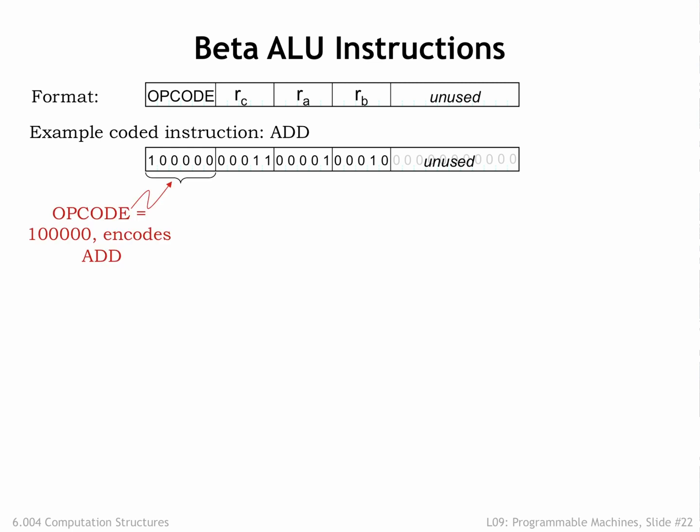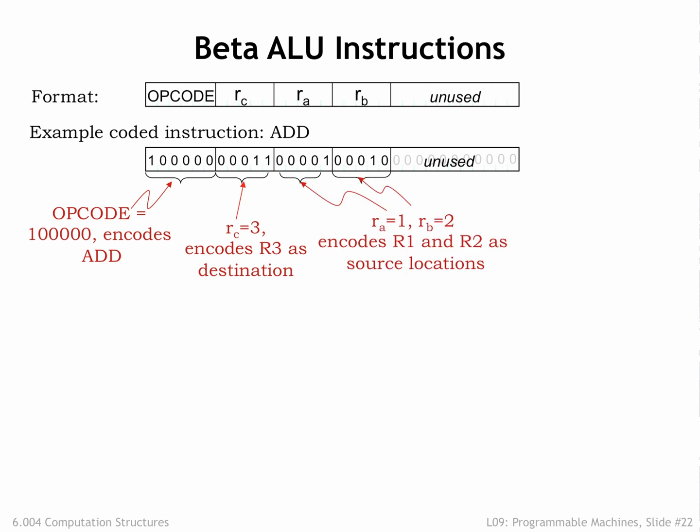Here is the binary encoding of an ADD instruction. The opcode for ADD is the 6-bit binary value 100000. You can find the binary for each opcode in the opcode table in the handout. The RC field specifies that the result of the ADD will be written into R3, and the RA and RB fields specify that the first and second source operands are R1 and R2 respectively. So this instruction adds the 32-bit values found in R1 and R2, writing the 32-bit sum into R3. Note that it's permissible to refer to a particular register several times in the same instruction — for example, we could specify R1 as both source operands and the destination register, which would effectively multiply the value in R1 by 2.